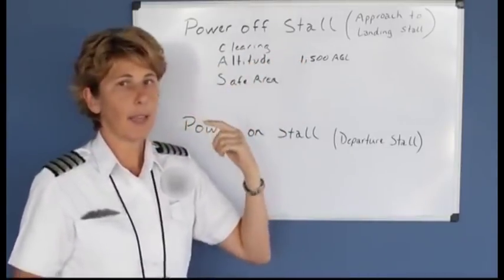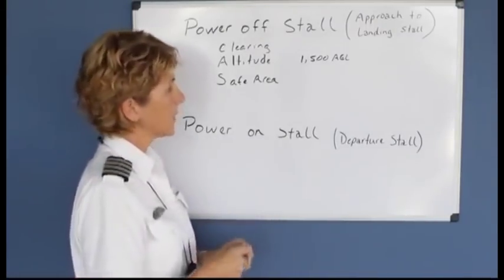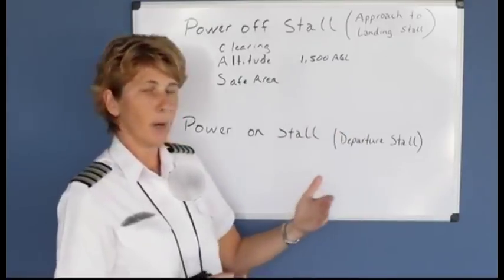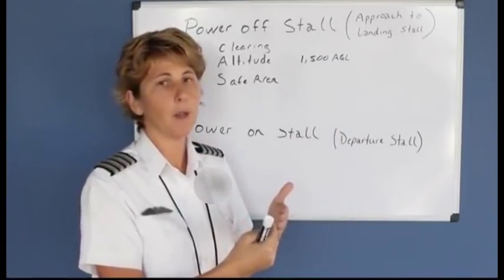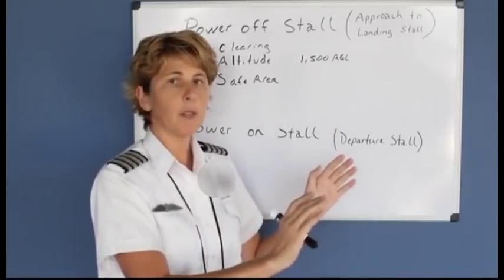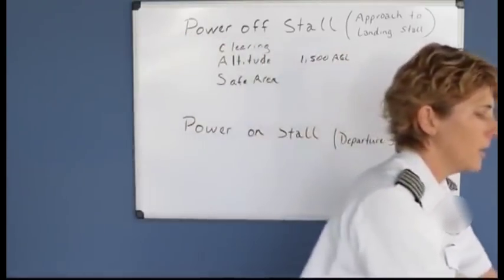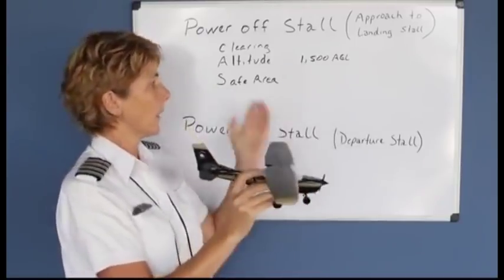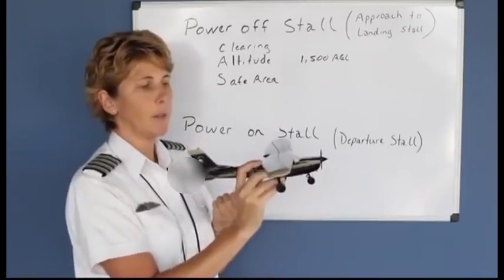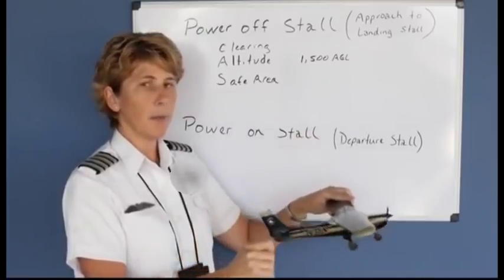When asked to perform one of these maneuvers, always think CAS: clearing turns, altitude consideration, and over a safe area. Next, set the airplane up as if coming in for a landing. Pull the carburetor heat out, pull the power back to about 1500 RPM, and make sure the airplane goes into the white arc on your airspeed indicator, then put full flaps in. Once full flaps are in, set up a descent at a very slow airspeed. So: clearing turns done, safe altitude, safe area—then carburetor heat on, power back, maintain pitch to hold altitude momentarily, put all flaps in, and set up a little descent.